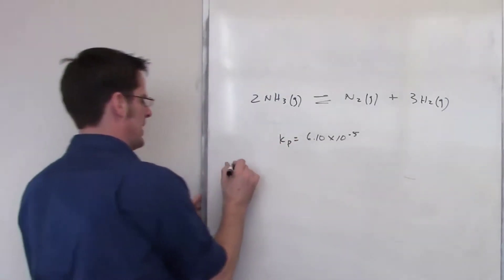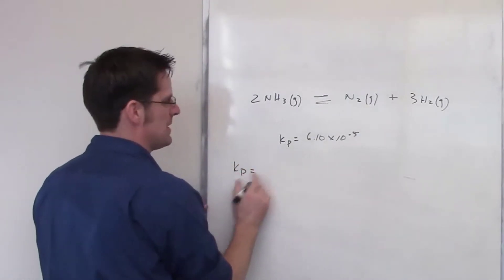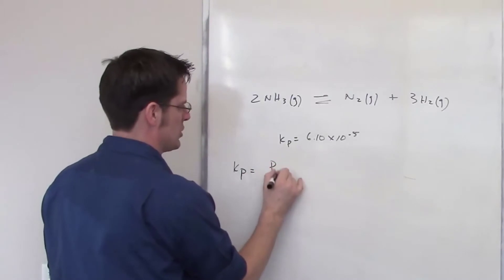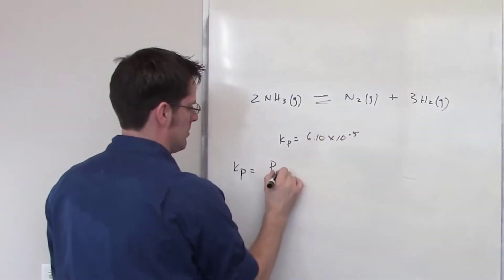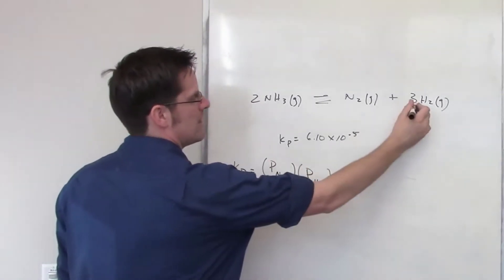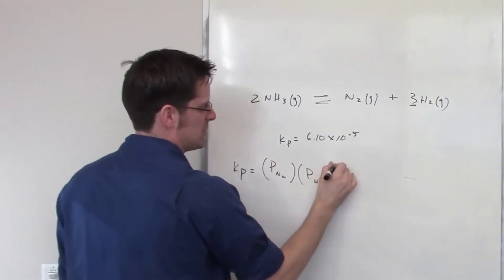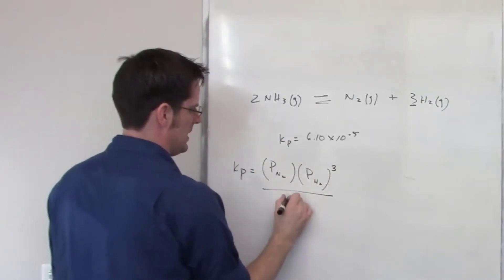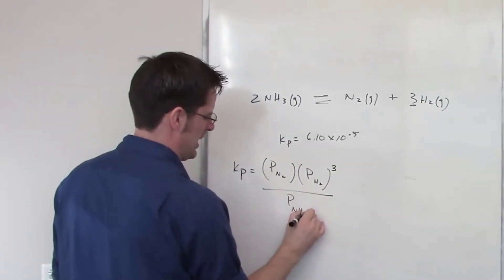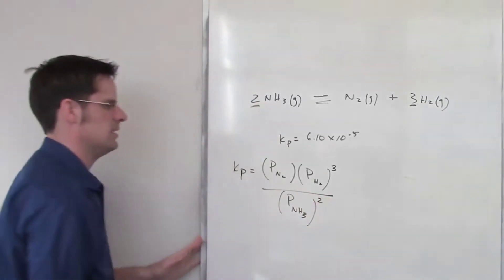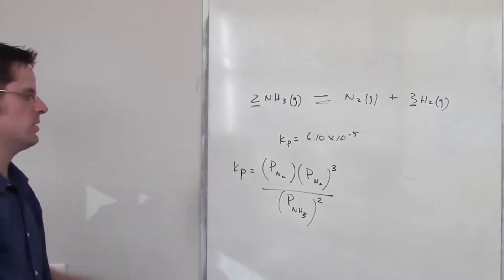Well, let's take a look at what Kp is actually going to be. Kp is going to be equal to the equilibrium pressures, so I'll write down the pressure of each of the products, N2, multiplied by the pressure of H2, and see that 3? That 3 becomes an exponent, cubed, divided by the individual pressure of NH3, squared.